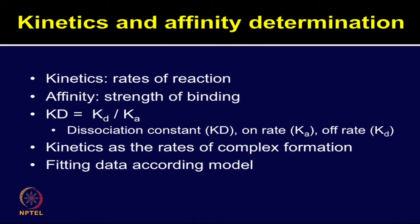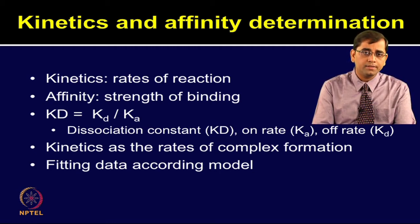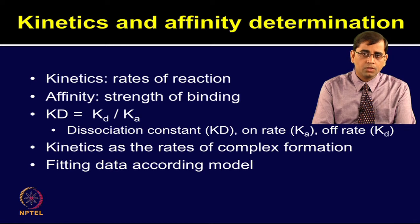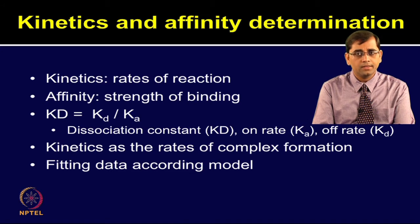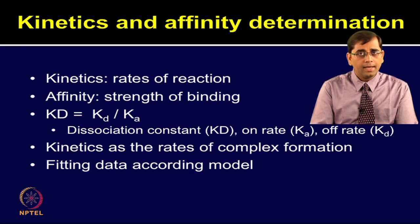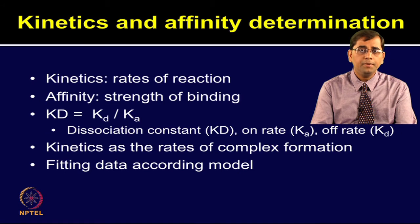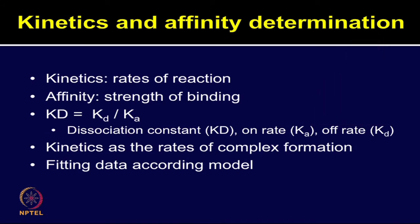By using SPR imaging, kinetics and affinity can be determined. Kinetics represents the rate of reaction, whereas affinity shows the strength of binding. The dissociation constant KD is given by kd divided by ka, where kd is the off rate and ka is the on rate. Therefore, kinetics representing the rate of biomolecular complex formation can be evaluated by processing the raw data and fitting it into the appropriate models.